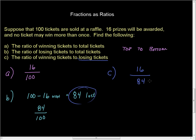Incidentally, if you've ever worked with probability, part A and part B work with the probability of winning and losing. Part C works with the odds of winning. The difference between probability and odds is that the odds compare winning to losing rather than winning to the total amount. Learn a little something.